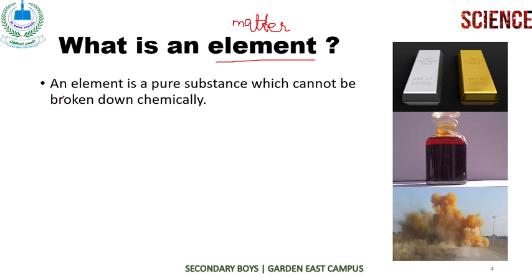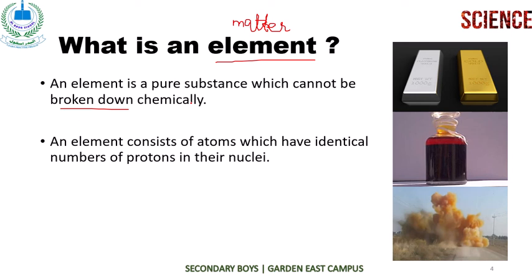In the definition of an element: an element is a pure substance which cannot be broken down chemically — you cannot further divide it into simpler substances. An element consists of atoms which have an identical number of protons in their nuclei. We will study about atoms in the next slide.